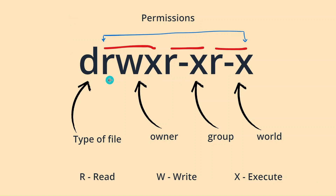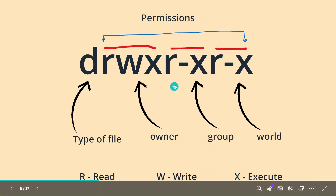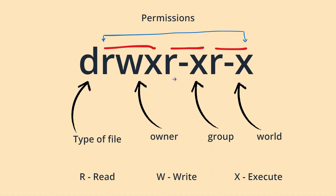Breaking down these details, they can be separated into two parts: first is the type of file, and then the rest of the characters define the permission. These permissions can be further broken down into three triads or groups of three characters. The first triad represents the permission for the owner — the user who created the file. Generally, the creator is the default owner, but that ownership can be changed. The second triad is for the group. The third triad is for all others who are not the owner or in the group.